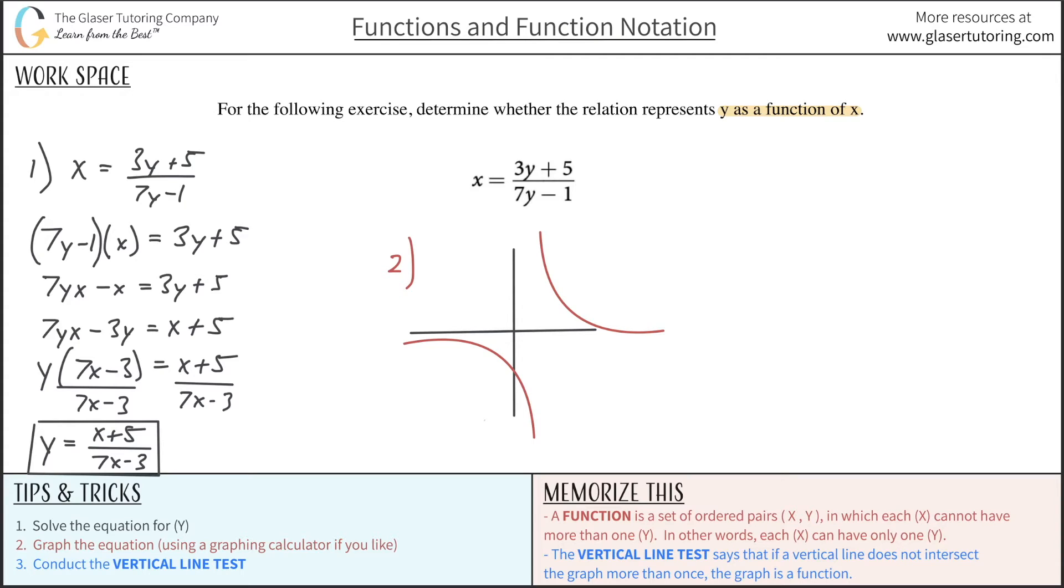And I know that the value of x here in the denominator cannot be 3 sevenths, because if it is, then this whole denominator becomes 0. So I know that there's no intersection of a vertical line right at that location of 3 sevenths. So I'm just going to actually draw that in right now. So this is 3 sevenths.